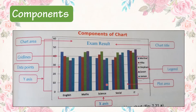Here you can see the components of a chart. This is the chart area, and the name here is the chart title. Grid lines and data points are also visible. This line is known as the Y axis, and here you can see the X axis. This is the plot area, and here is the legend.